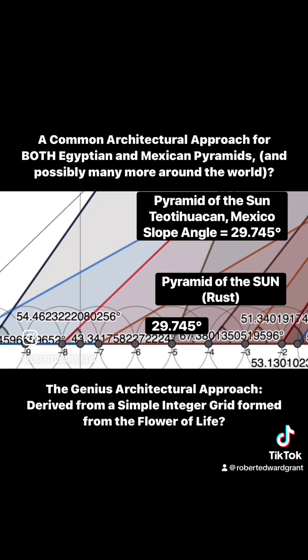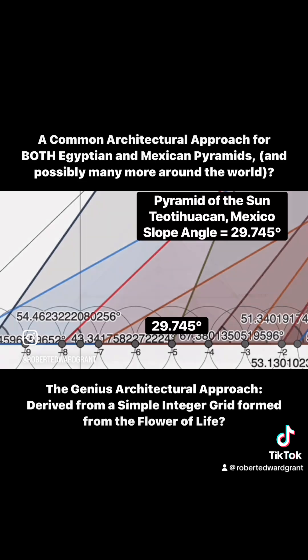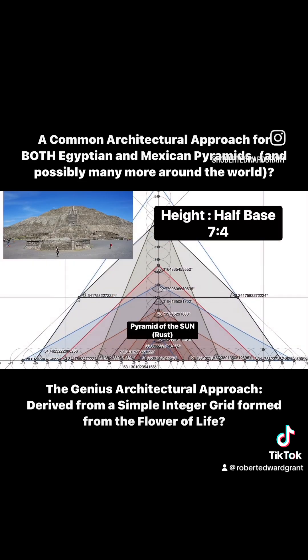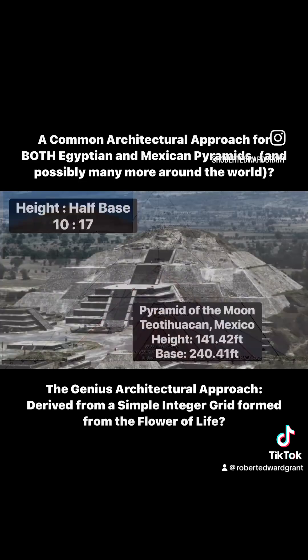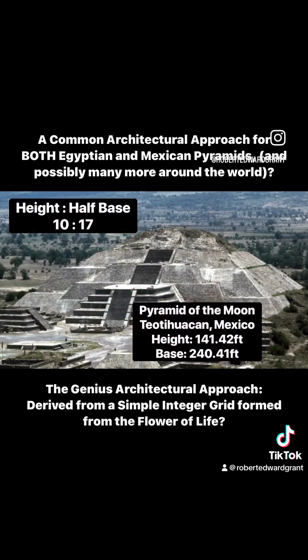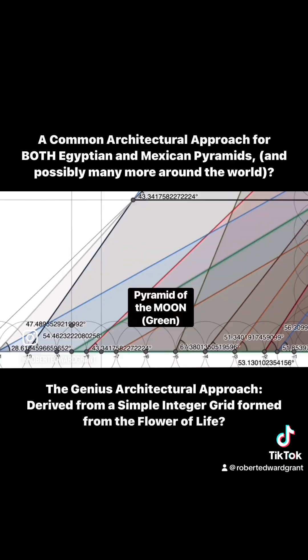Now let's look at the pyramids in Mexico. The Pyramid of the Sun gives us a unique 7-over-4 relationship, and it also matches perfectly inside this grid pattern. And the Pyramid of the Moon has a 10-over-17 relationship, and it also matches perfectly within this grid pattern.